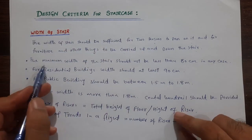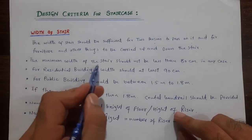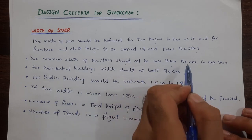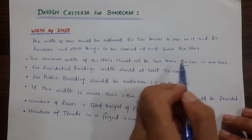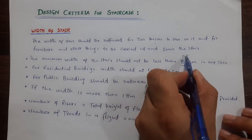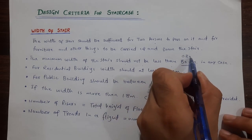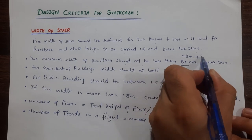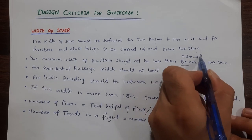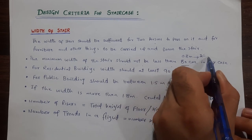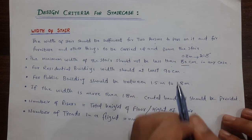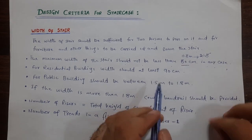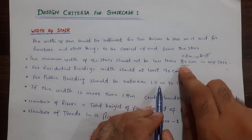The minimum width of the staircase should not be less than 80 centimeters, or 0.8 meters, or 2 feet 8 inches. In any case, it should not be less than 80 centimeters.